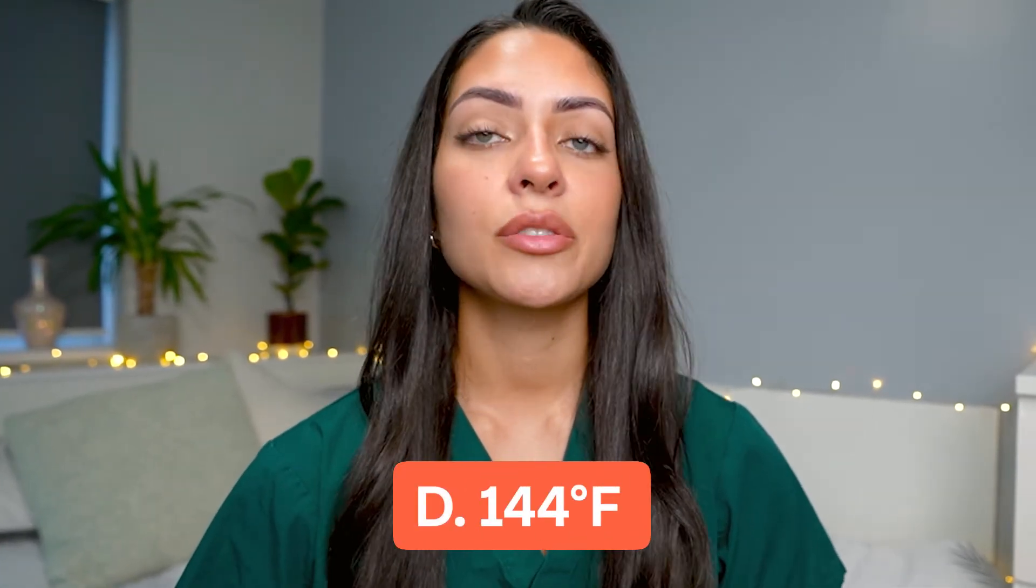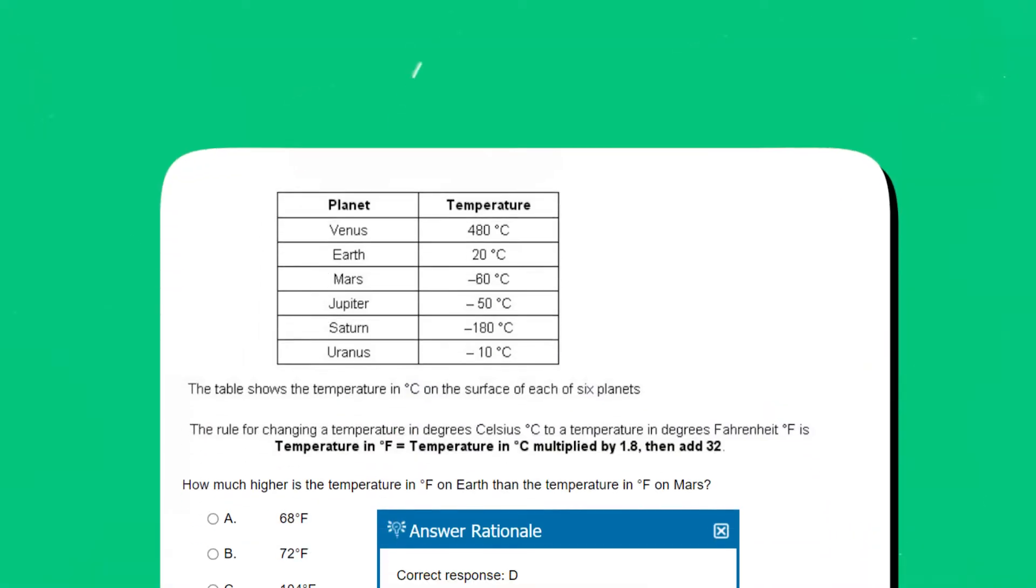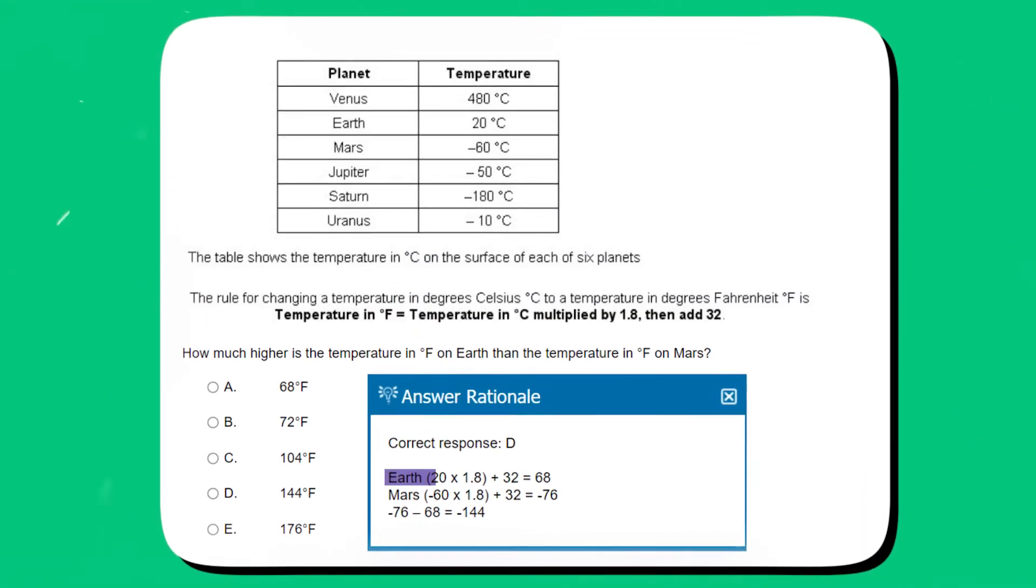The correct response is D, 144 Fahrenheit. This is because for Earth it's 20 times 1.8 plus 32, which gives you 68. On Mars it's minus 60 times 1.8 plus 32, which gives you minus 76. Minus 76 minus 68 gives you minus 144.